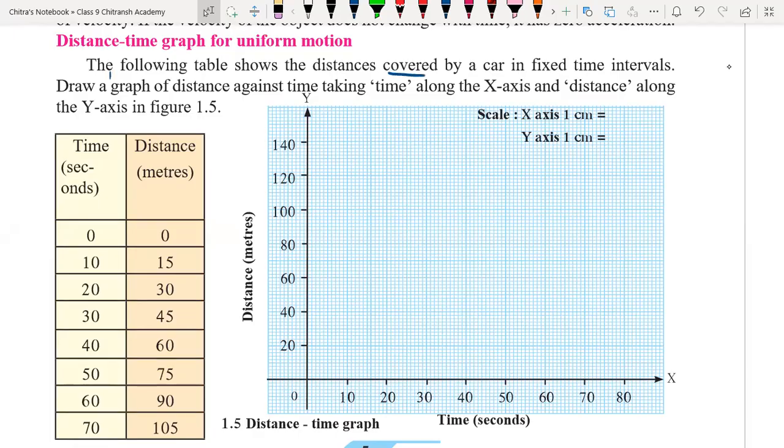The following table shows the distance covered by a car in a fixed time interval. See, time interval is given here, fixed. Very important to understand the concept.